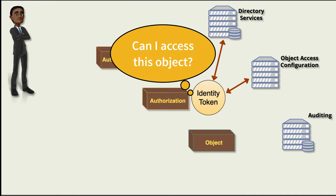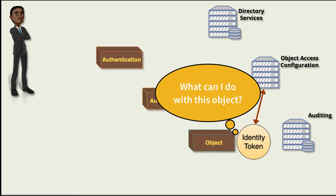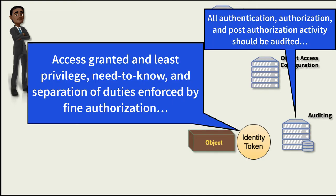For example, when an authenticated subject attempts to access an object, the subject's identity is compared with a list of authorized subjects — a list maintained by the object's administrator. If the subject is on the authorized subject list, it's granted access, what is sometimes called coarse-grained authorization. But functional access — what a subject can actually do with the object — is often further controlled with more granular authorization settings, sometimes called fine authorization, maintained for each authorized subject by the object's administrator. Authorization can also be affected by session characteristics defined and managed in attribute access control solutions.